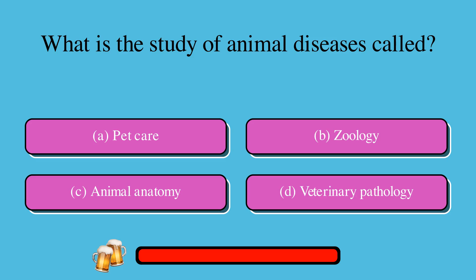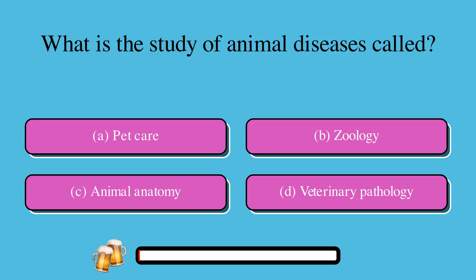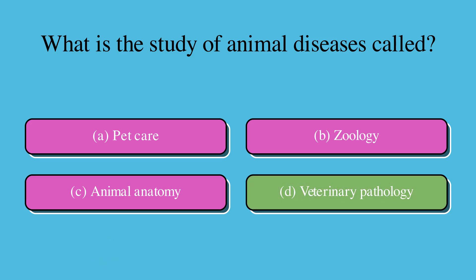What is the study of animal diseases called? A. Pet care, B. Zoology, C. Animal anatomy, or D. Veterinary pathology. The correct answer is D. Veterinary pathology.